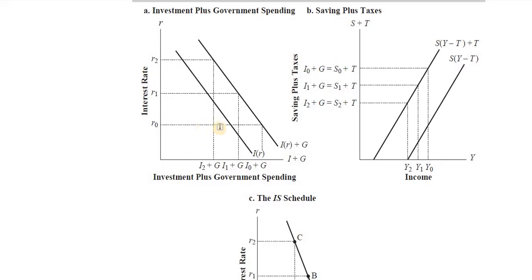What happens is simple. The moment we add the government component to investment demand, the curve shifts towards the right. For example, at rate of interest r0, investment is at one level; but once government is also part of the economy, government expenditure gets added onto this and the curve shifts to the right.